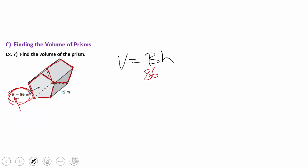Multiplying that by the height, the height being 15, gives us a volume for this particular figure of 1,290. And that's meters. It's volume, so it's cubed.